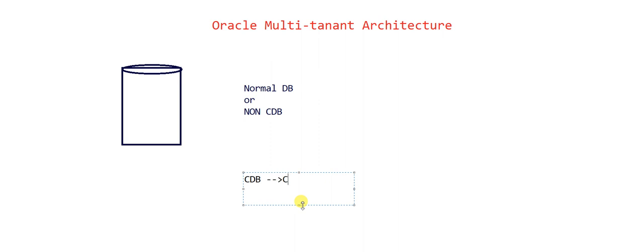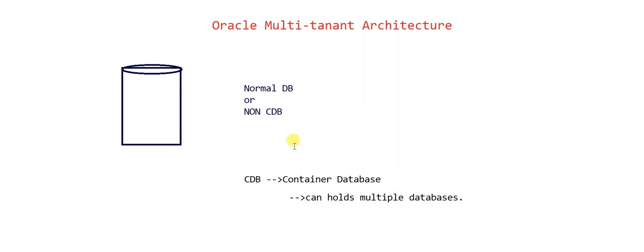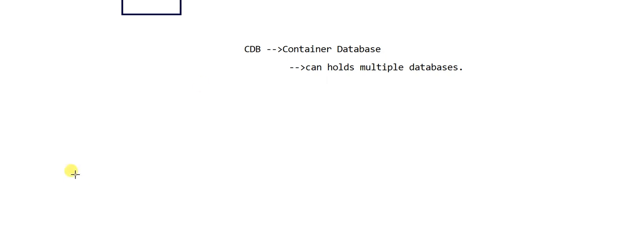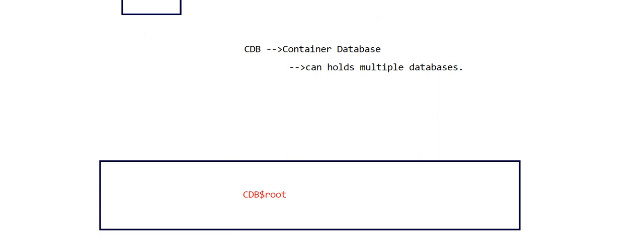The Container Database is denoted by CDB — Container Database. A container database is a database which can hold multiple databases inside it. So it's itself a database, but it can hold multiple databases. Let me draw an architectural diagram so you will understand. This is a container database — it's the same as a normal database plus some extra features. By default, the name of the container database is CDB$ROOT. This is like a regular database — it has its control file, data file, and so on.